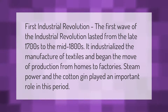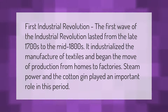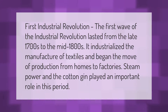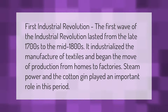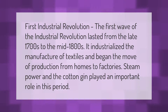The first wave of the Industrial Revolution lasted from the late 1700s to the mid-1800s. It industrialized the manufacture of textiles and began the move of production from homes to factories. Steam power and the cotton gin played an important role in this period.